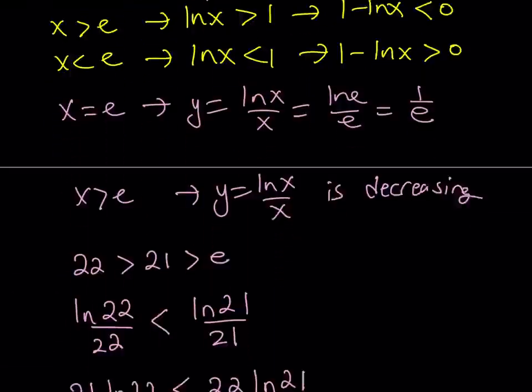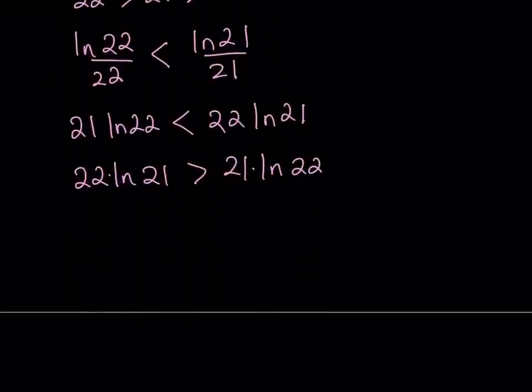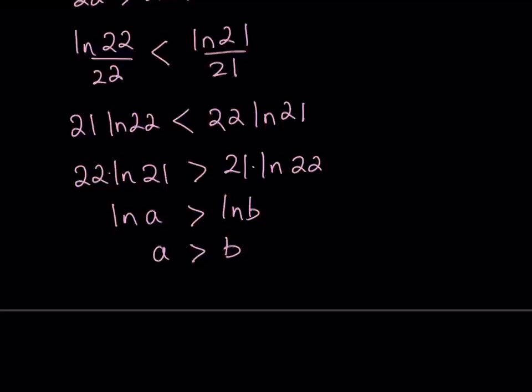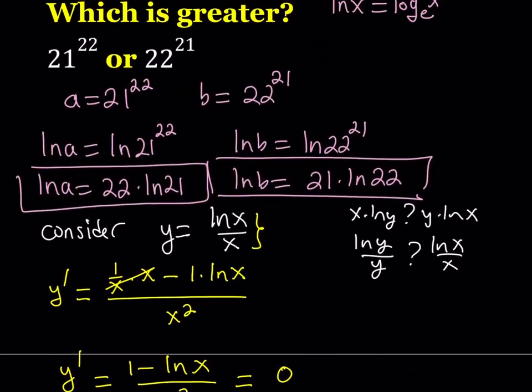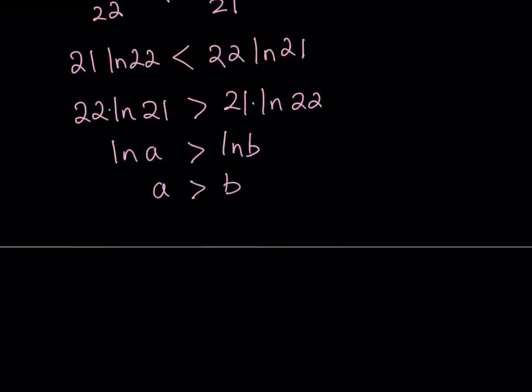We can safely say that from here, ln A is greater than ln B, which means that A is greater than B because you can basically do e to the power of both sides. And since one of the exponents is larger than the other, when you raise it, e to the power, the inequality will be preserved. And this means that, remember, we named A and B something, 21 to the power of 22 is going to be greater than 22 to the power of 21.